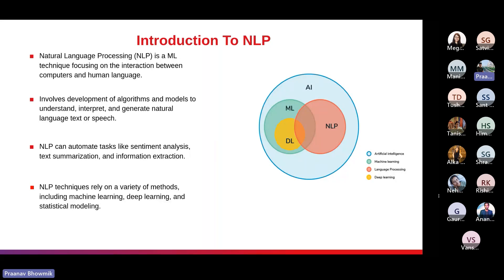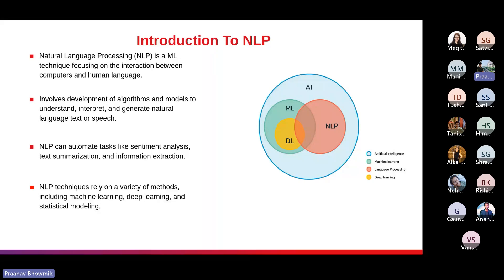One key aspect of NLP is natural language understanding (NLU), which involves comprehending and interpreting human language. It allows machines to understand the context, sentiment, intent, and entities within a piece of text, enabling applications such as virtual assistants and chatbots to provide intelligent responses. Another important component is natural language generation (NLG), which focuses on generating human-like language as output, allowing machines to create coherent and contextually appropriate text or speech.